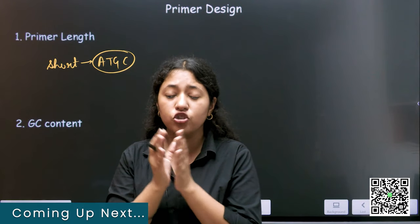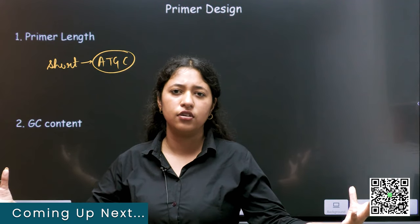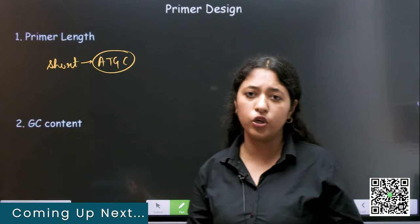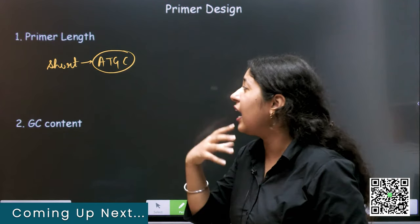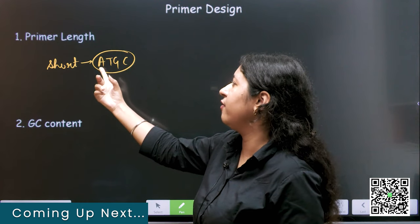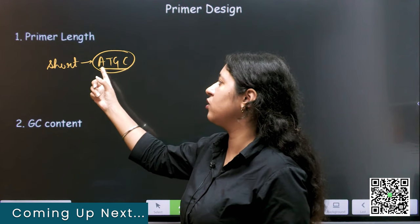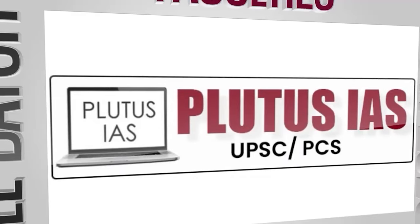The DNA, the genomic DNA is so huge. It is very high possibility that it will have these complementary sequences of these four.